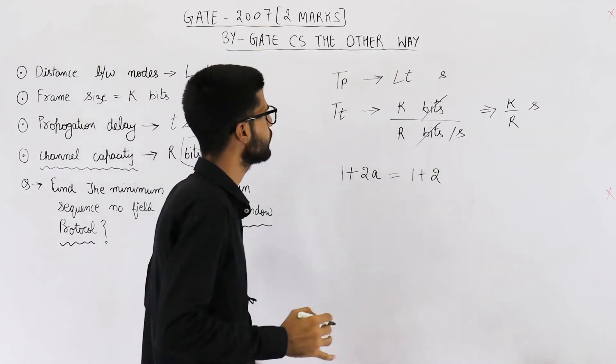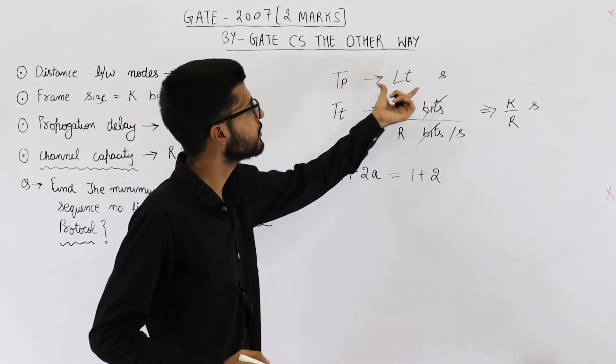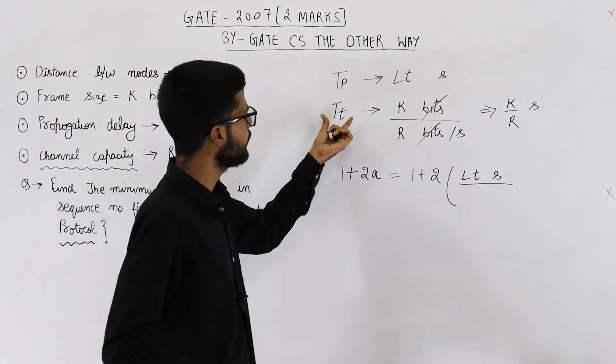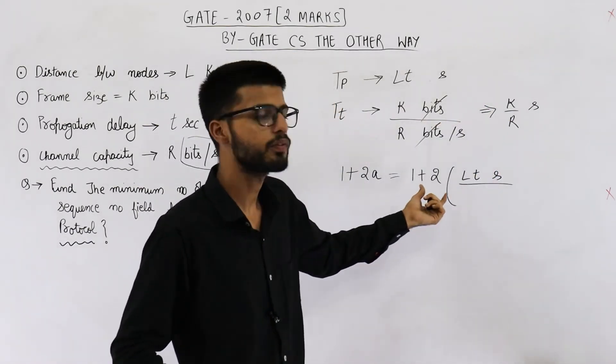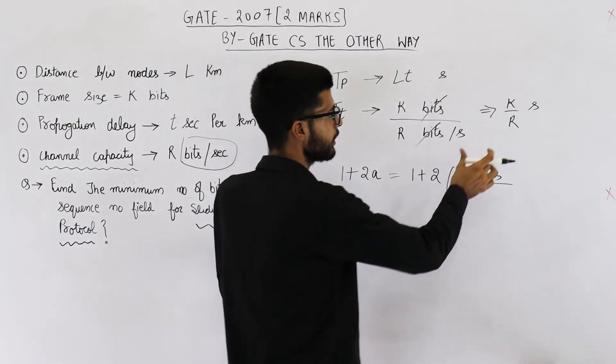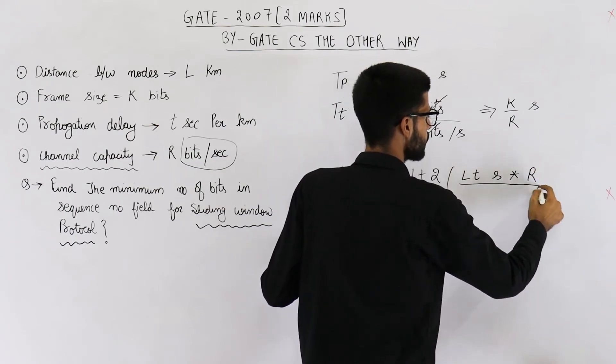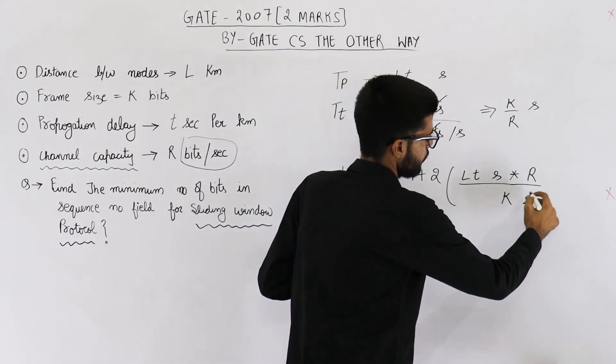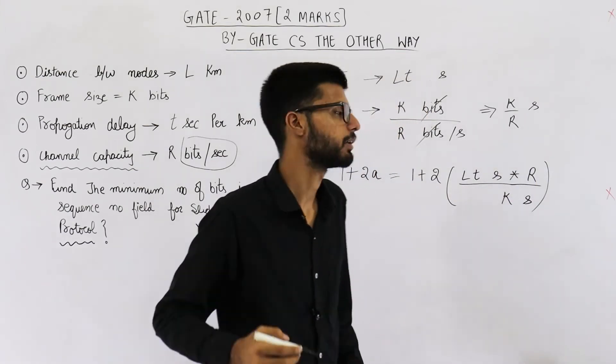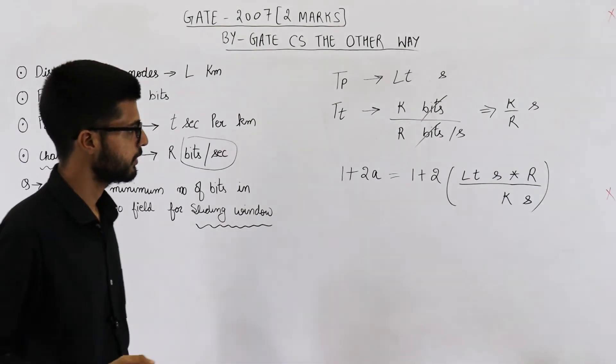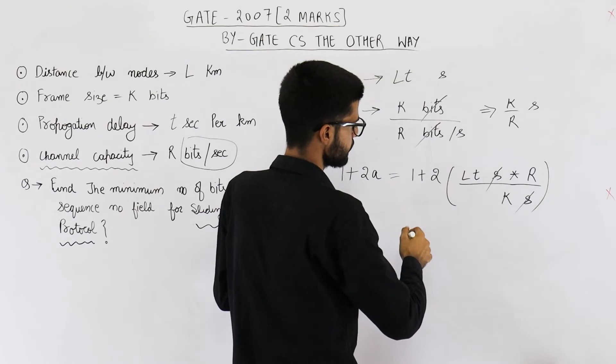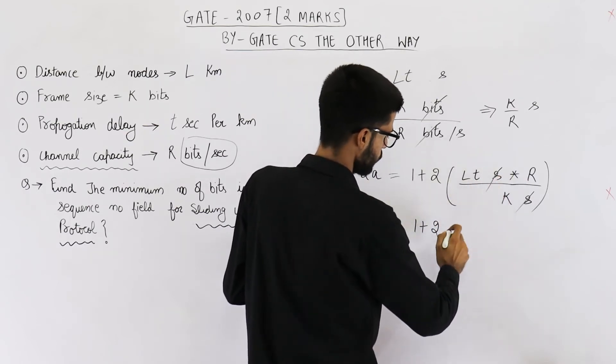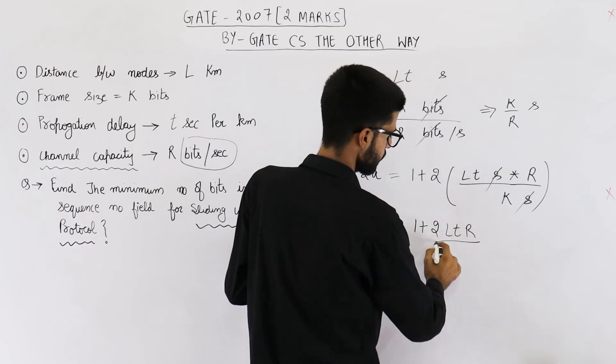And value of A is Tp divided by Tt. Tp is LT seconds. So this is LT seconds. And Tt is K by R seconds. But here we want to divide by Tt. That means 1 by Tt. So K by R seconds will become R by K seconds. Here this seconds will be written in the denominator. Now let us just simplify it. This is seconds and seconds will get cancelled. And this is 1 plus 2LTR. 1 plus 2LT into R divided by K.